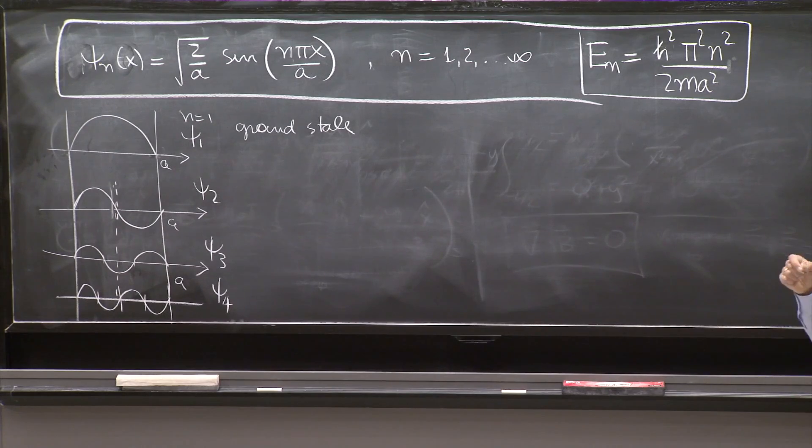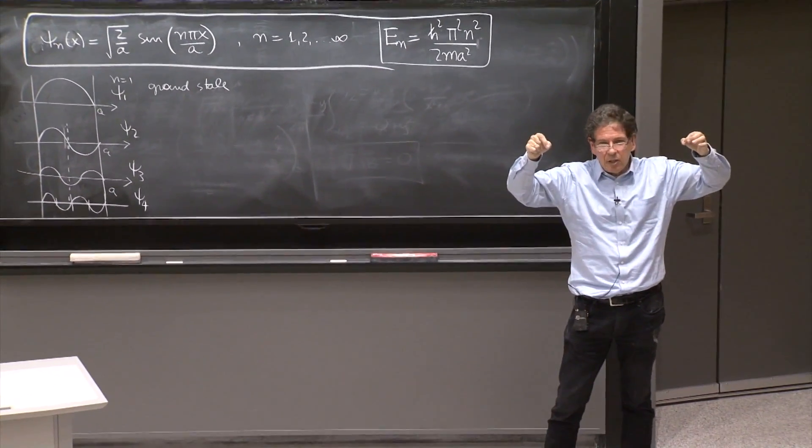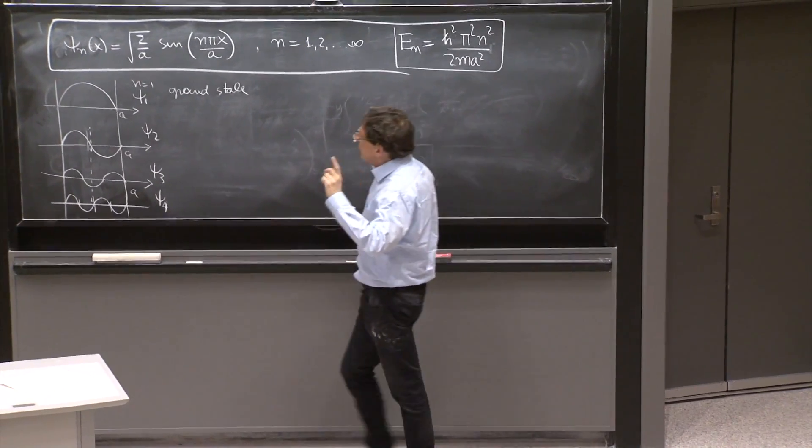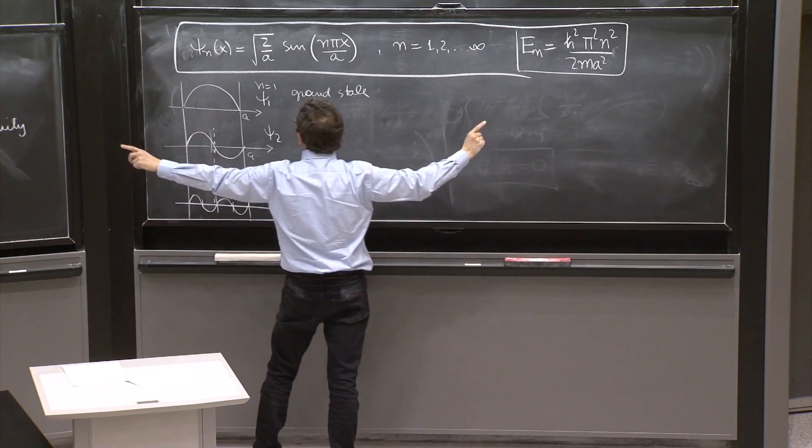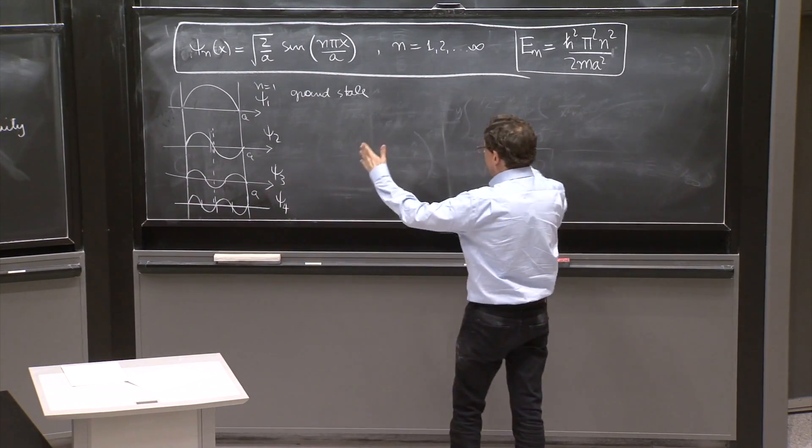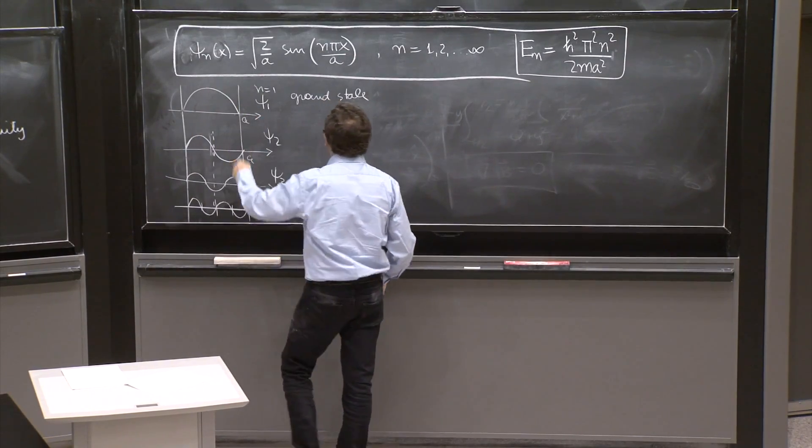A node in a wave function is called a point where the wave function vanishes, but it's not the endpoints or the points at infinity, if you could have a range that goes up to infinity. It's an interior point that vanishes.